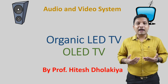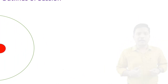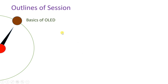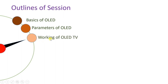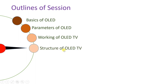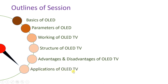OLED means organic light emitting diode television system. To understand OLED television, here is my session outline: first I will discuss basics of OLED, then explain different parameters of OLED, then the working of OLED television, then the structure, then advantages and disadvantages, and finally some applications of OLED display.